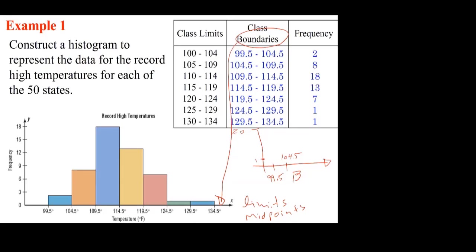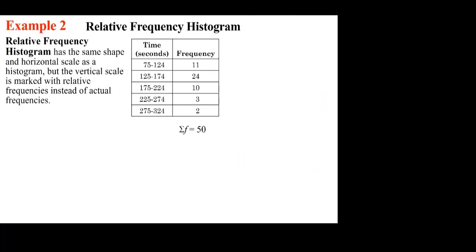It's good to stick with boundaries because some graphs require them. The vertical axis in this case is frequency, since that is what is given. You can also use percent frequency, but the shape ends up looking very similar. Just be careful with your scale and make sure the axis labels read 'frequency' or 'percent' as appropriate.